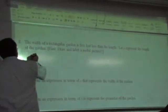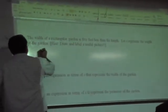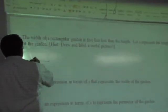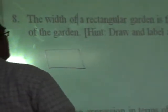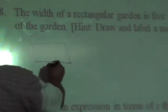How about if you start with a rectangle and say, okay, this is the garden. What are we letting X represent? The length. So, I'm going to put an X right here.